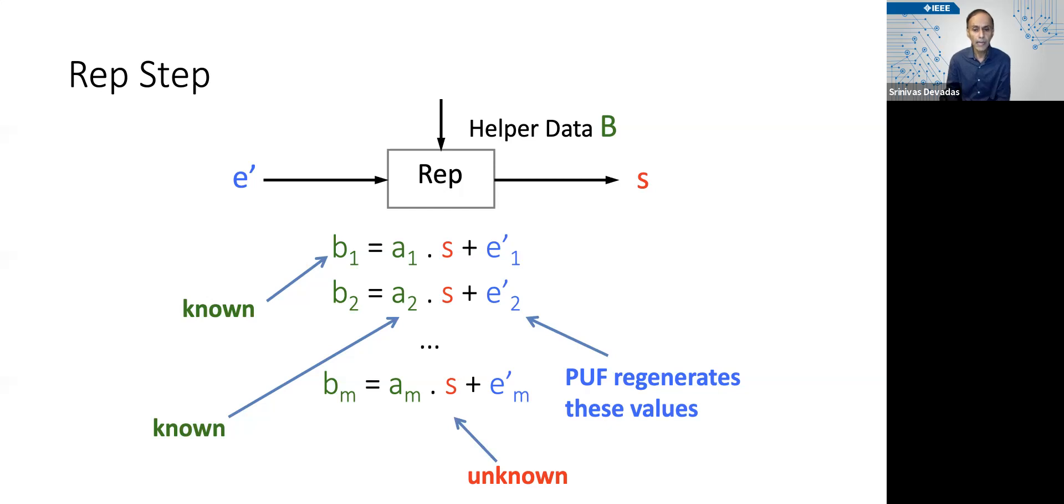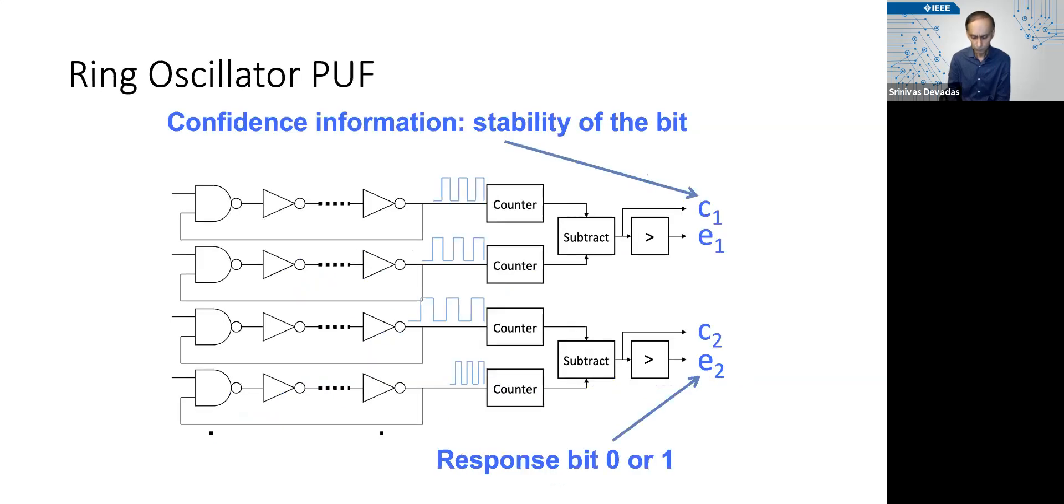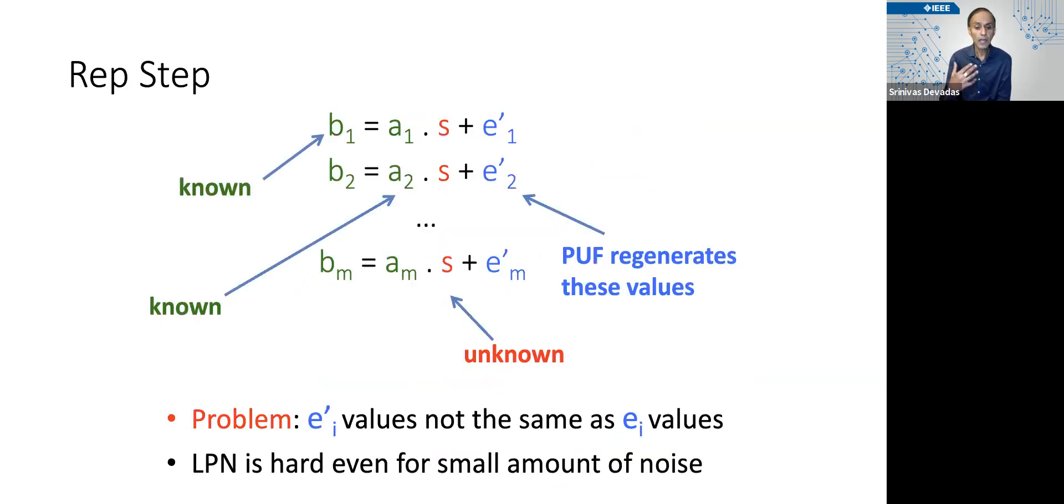So what happens now is that we're in a situation where your e′ᵢ values are not the same as the eᵢ values. And so we can't really do this reproduce efficiently because we don't quite know how to solve the system of equations, which is maybe an easy LPN problem, but that's not a polynomial time solvable problem because we don't have the exact eᵢ values.